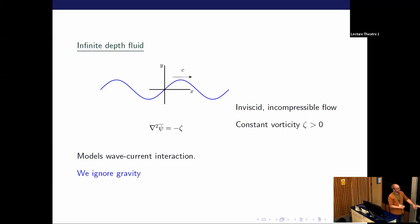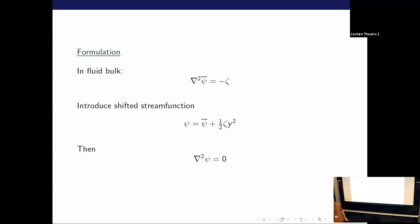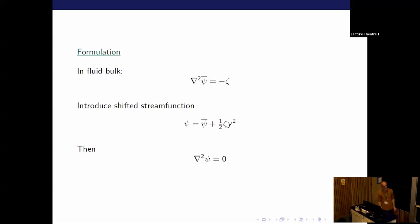Psi's got a bar on it because I want to remove that in a second. So psi is the stream function. We've got Poisson's equation for that. If we start with Poisson's equation in the bulk of the fluid, then we redefine the stream function to get rid of this zeta on the right-hand side, to introduce a shifted stream function psi without a bar on top of it. Then we get Laplace's equation for psi in the main part of the fluid.